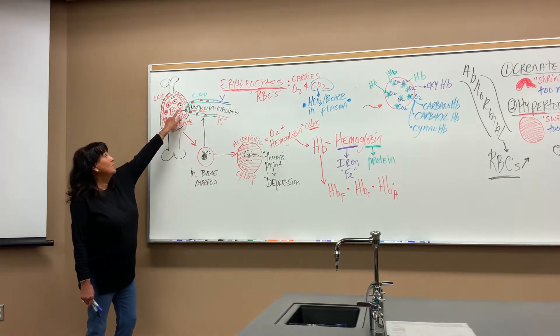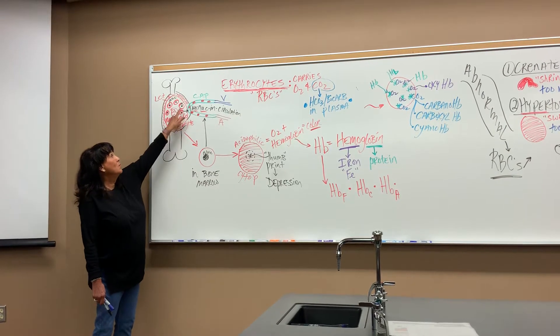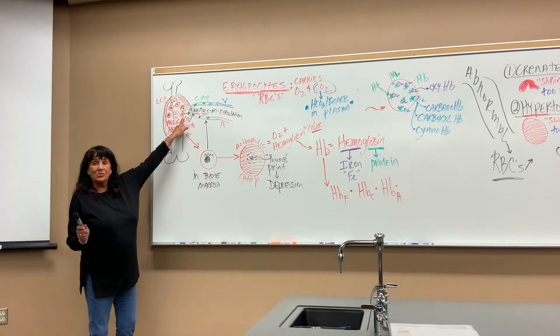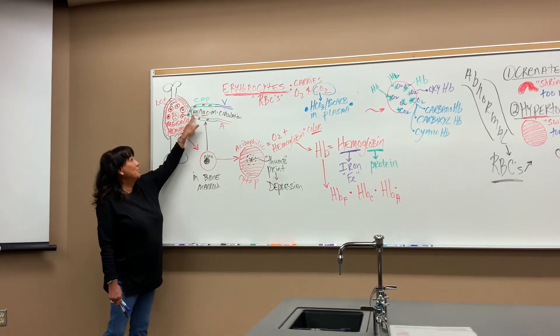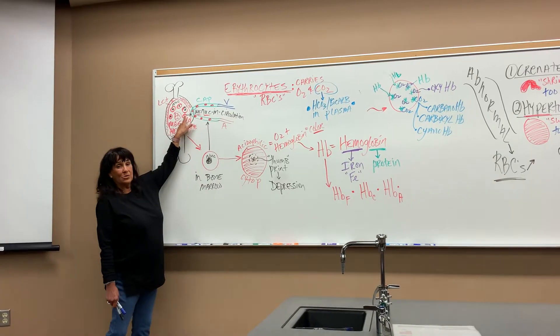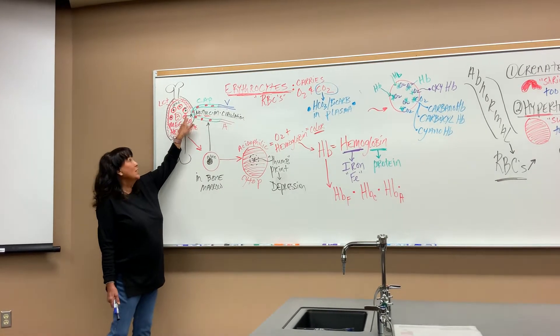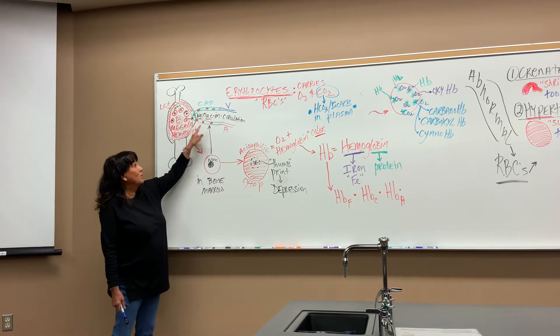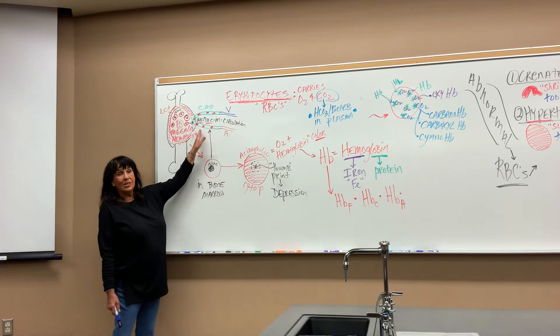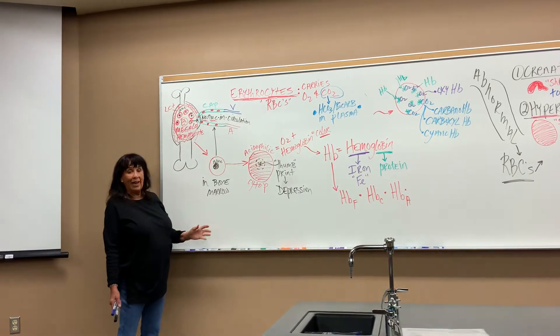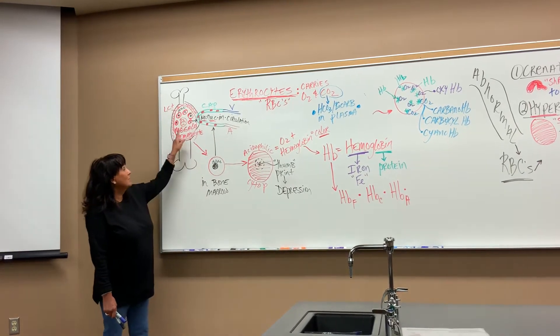When they're in the bone marrow, they actually have a nucleus. And now, this is the strange part. When they diffuse into the capillary, the nucleus disappears. It just disintegrates. So they have no nucleus when they're out in circulation. If they do have a nucleus, that could mean bone marrow cancer.